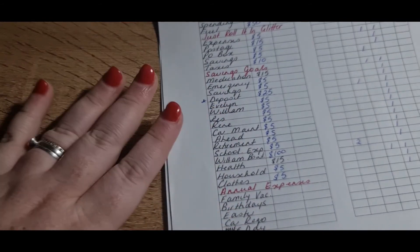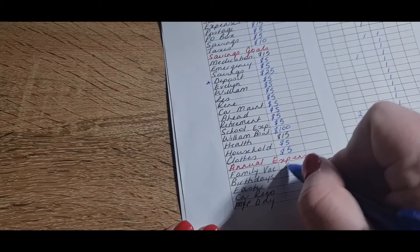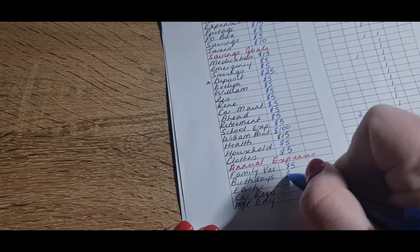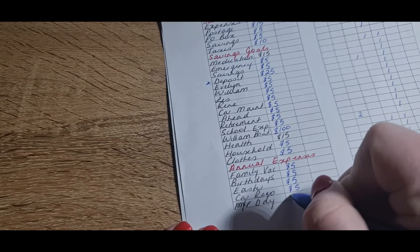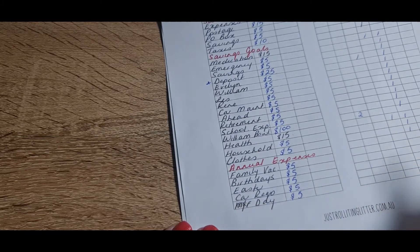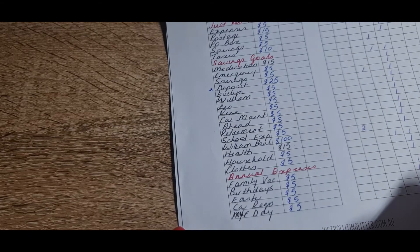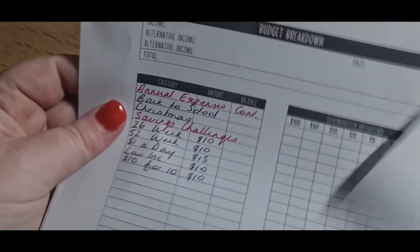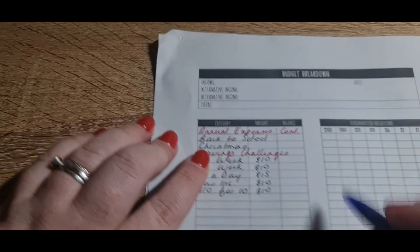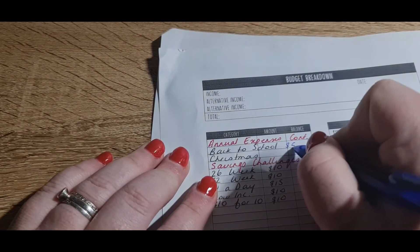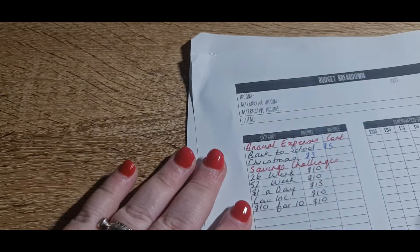Family vacation, that is getting $5. Birthdays, $5. Easter, $5. Car rego, $5. Mothers and Fathers Day is getting $5. And I'll just quickly fill this in before I flip the page over. So they're all getting $5. Back to school is getting $5, and Christmas is getting $5.